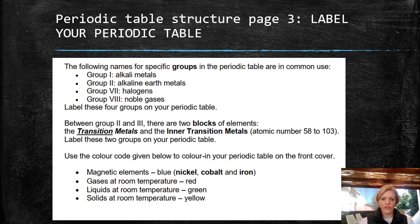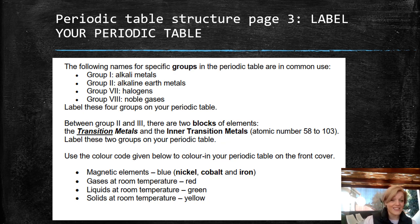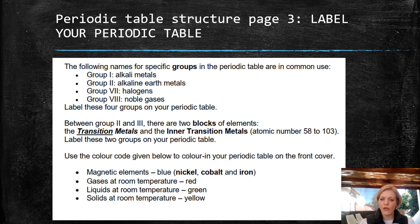I've already discussed quite a lot of this within the first part of the lesson, so this section summarizes exactly what I've said before. The following names with specific groups in your periodic table are very common: alkaline metals, alkaline earth metals, halogens, and noble gases — you should have already labeled these. Between Group 2 and Group 3 there are two blocks of elements: the transition metals and the inner transition metals. Label these two — they are a separate entity that we deal with later on.